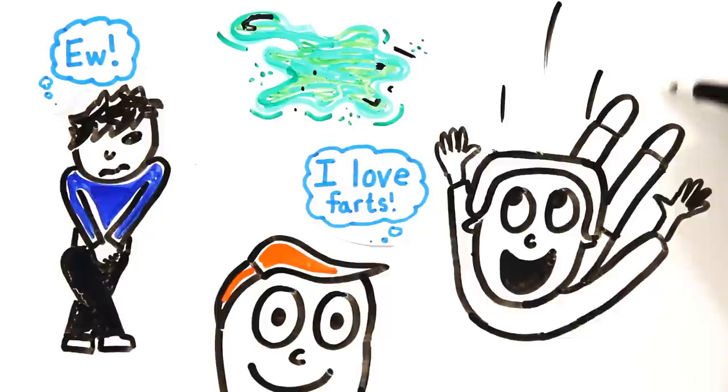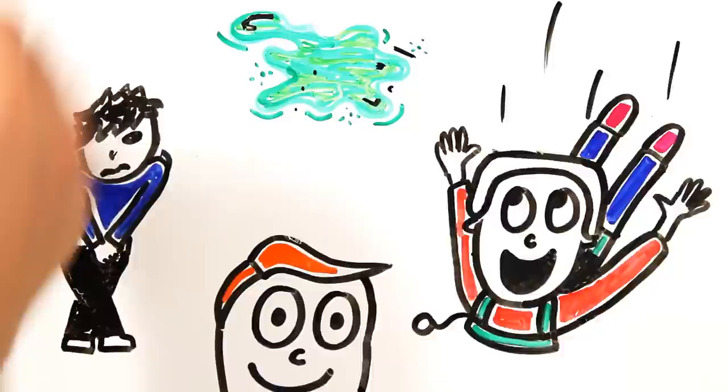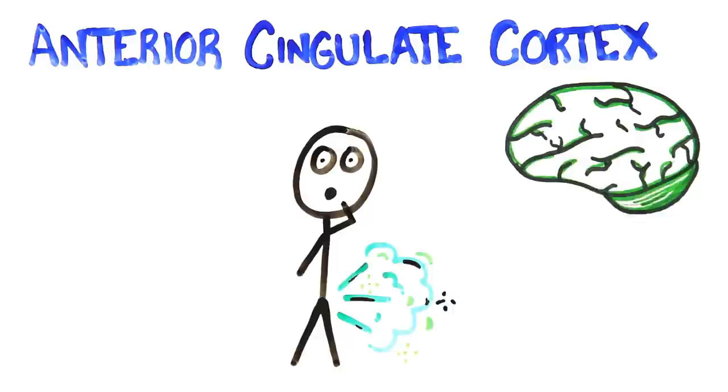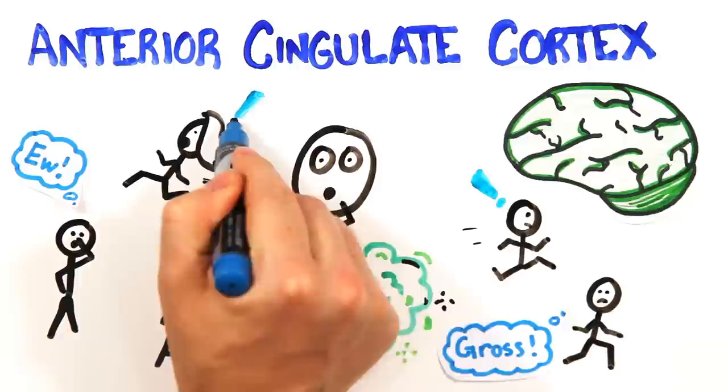The anterior cingulate cortex, which processes surprise, also plays a big role. When we fart, we know it and can anticipate the accompanying smell. But when somebody rips a silent but deadly fart into a crowded room, the brain's expectations of reality are smashed by the negative stimulus, making it all seem even more foul.